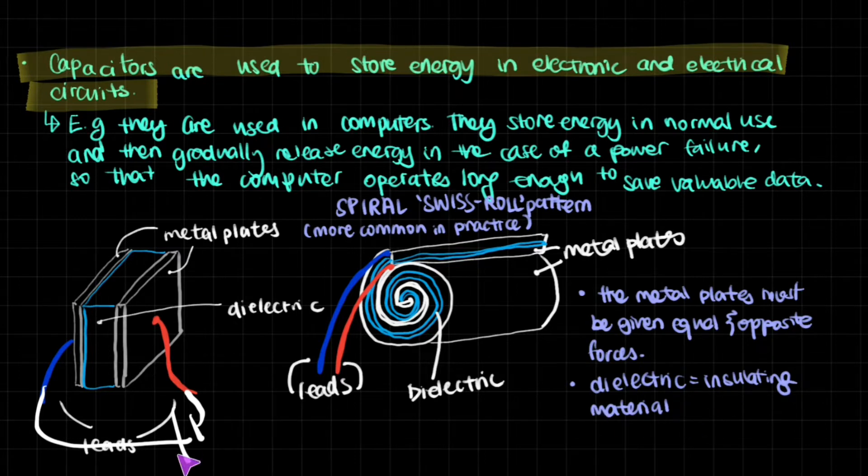So even though as a result of the cell, this might have a positive charge, this might have a negative charge, the charge will not flow through the insulating material. The charge won't flow through the dielectric because it's an insulating material. Now, that's essentially what it is.